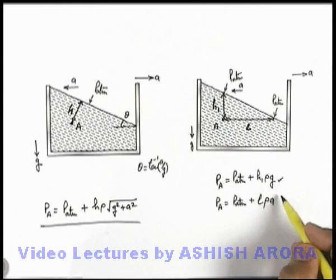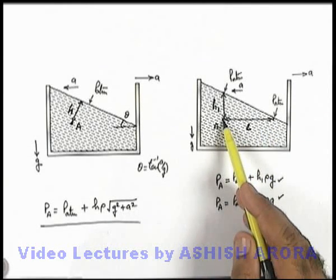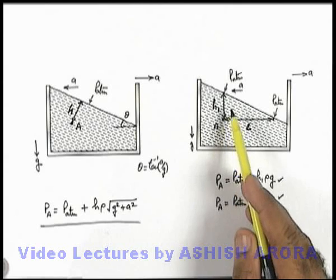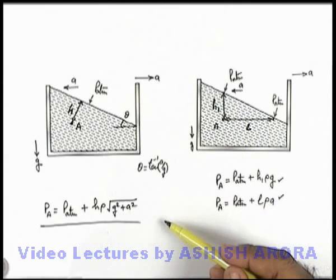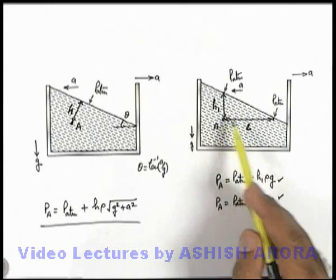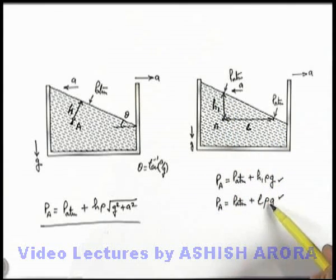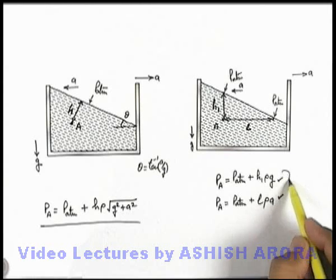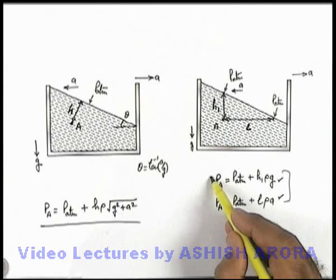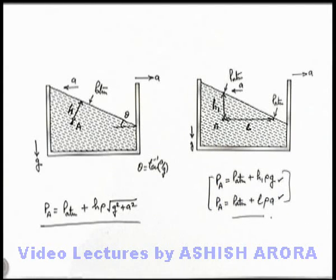So there are 3 ways to directly find the pressure at point A: one is along the effective gravity g_effective, another is along the vertical depth h1, and the third is along the horizontal length l. Depending on what information is available, any of these methods can be used.